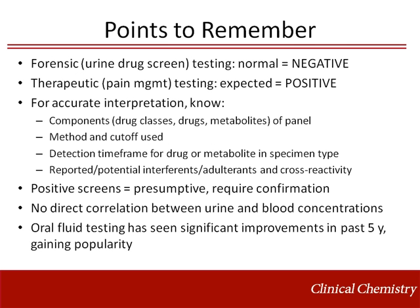In forensic testing, commonly referred to as urine drug screens, the normal result is negative. In therapeutic testing, primarily used for pain management, the expected result is positive. To accurately interpret drug screen results and provide consultation on discrepant or confounding results, one must consider the components of the panel, the method and cutoffs used, the detection window for different drugs and different specimen types, and be aware of any reported or potential cross-reactivity and interfering or adulterating substances and their effects. Positive drug screens are presumptive results and often require confirmation. There is no direct correlation between urine and blood drug concentrations. Oral fluid testing has seen significant improvements in the past five years and is gaining popularity for a variety of applications.